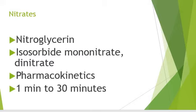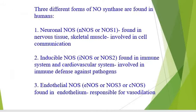Another important route is the transdermal route, which also bypasses the hepatic first-pass effect. Furthermore, we have different types of nitric oxide synthase present in humans: neuronal nitric oxide synthase, inducible nitric oxide synthase, and endothelial nitric oxide synthase. Neuronal NOS is involved in nerve tissue and skeletal muscles; inducible NOS is part of the cardiovascular and immune system; while endothelial nitric oxide synthase is responsible for vasodilation.